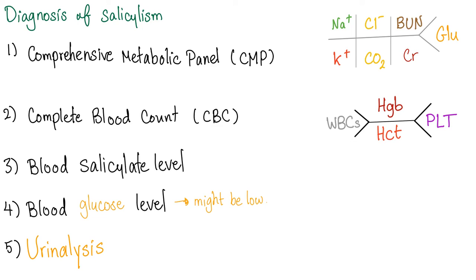Diagnosis of salicylism. Number one: comprehensive metabolic panel, or CMP. Number two: complete blood count, or CBC. Starting with CBC — you have hemoglobin and hematocrit for red blood cells, white blood cells, and platelets. Then the CMP: sodium, potassium, chloride, CO2, BUN and creatinine, and glucose.